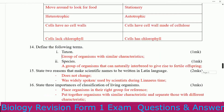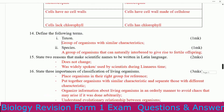Define the following terms. A taxon is a group of organisms with similar characteristics. A species is a group of organisms that can naturally interbreed to give rise to fertile offspring.